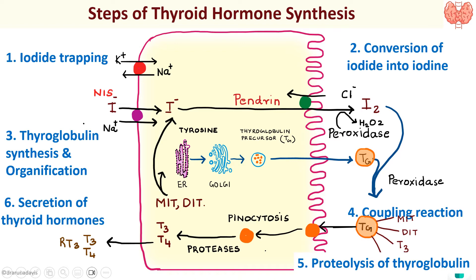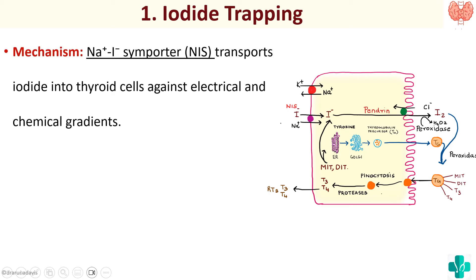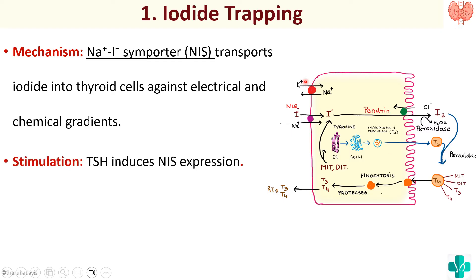Let's see each step in detail again. The first step was iodide trapping, in which the iodide is taken into the follicular cell via the sodium iodide symporter, moving against electrical and chemical gradients. That is why an active pump is needed. The hormone TSH (thyroid-stimulating hormone) induces the expression of this NIS pump, and that is how TSH stimulates the production of T3 and T4. It is an active transport requiring ATP.